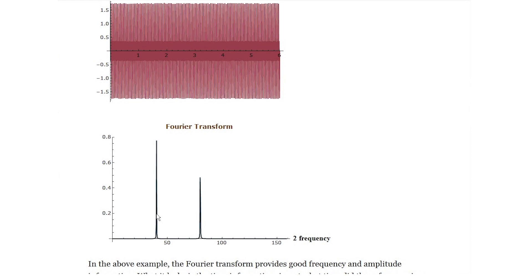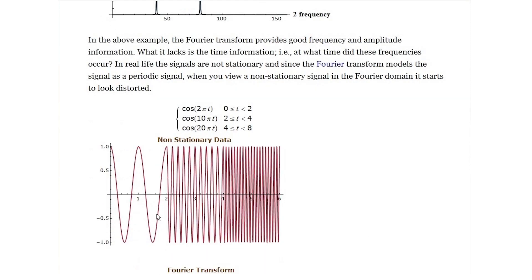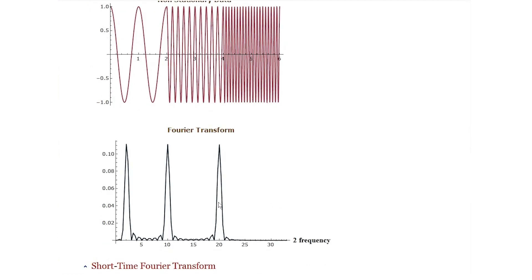Now let us look at a second example. We are going to consider what is called non-stationary data, where the frequency changes as a function of time — from t=0 to t=2 we have a signal with a certain frequency, from 2 to 4 it's a certain frequency, and 4 to 6 it's a different frequency. If you perform a Fourier transform on this signal, you end up getting three peaks, but this does not give you complete information. It tells you there are three frequencies present, but it does not tell you at what instances in time those frequencies occurred. So the information provided by the Fourier transform is incomplete.